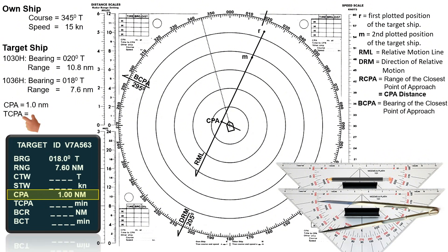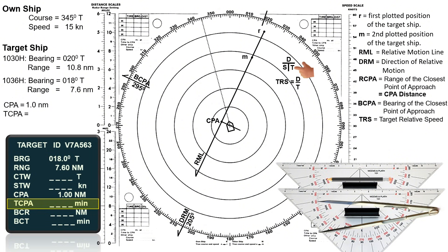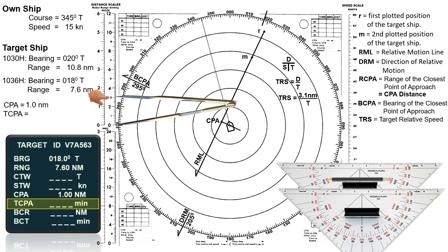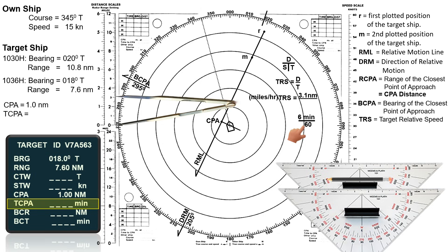Next, let's determine the time of the closest point of approach, TCPA. But before doing so, we need to calculate the target's relative speed. The formula is: speed equals distance divided by time. The distance is from R to M — in this case, 3.1 nautical miles. The elapsed time is 6 minutes. Since speed is in miles per hour, we convert 6 minutes to hours by dividing by 60, giving 0.1 hour. The target's relative speed is 31 knots.